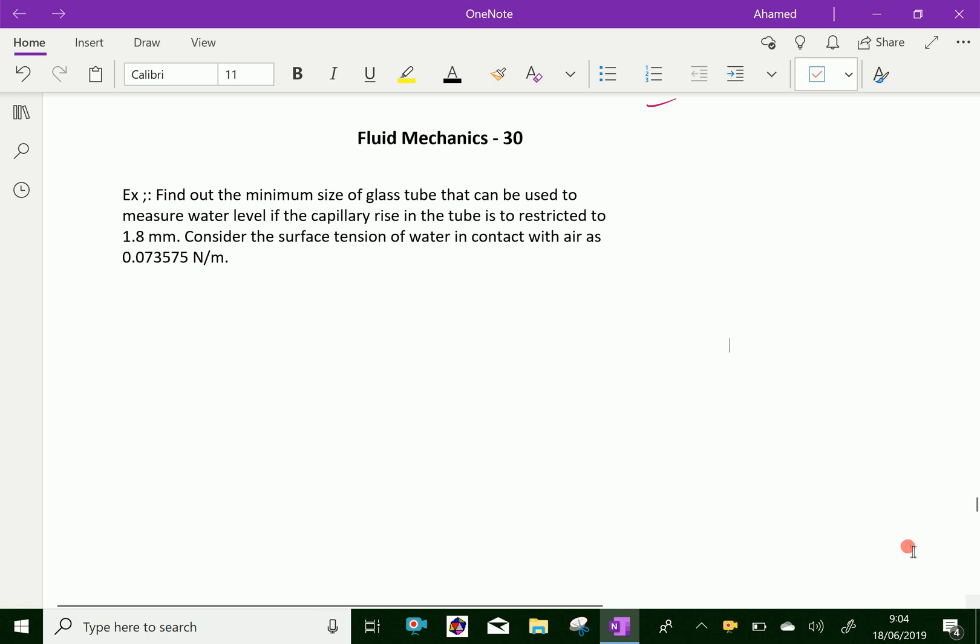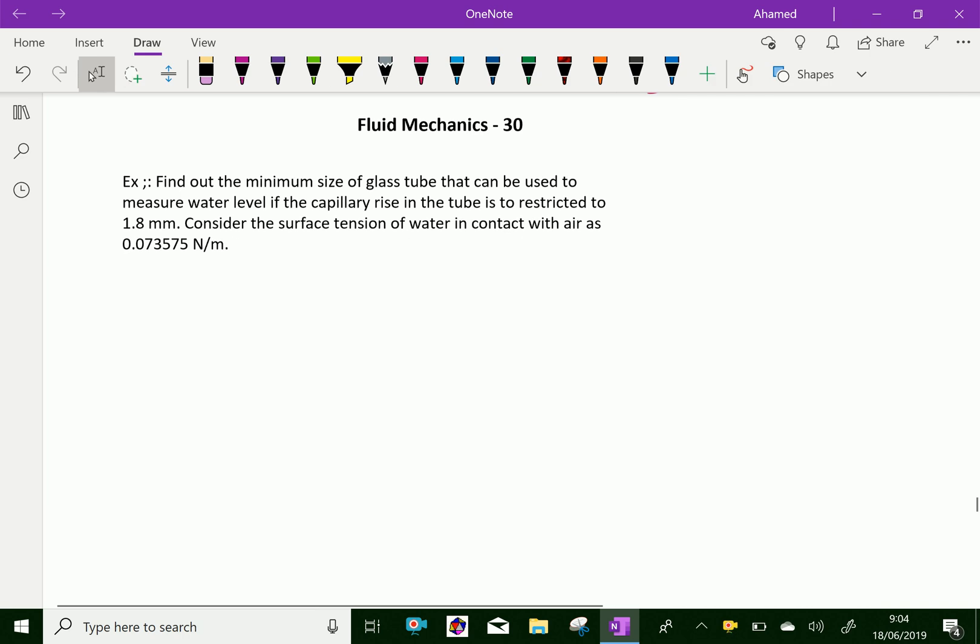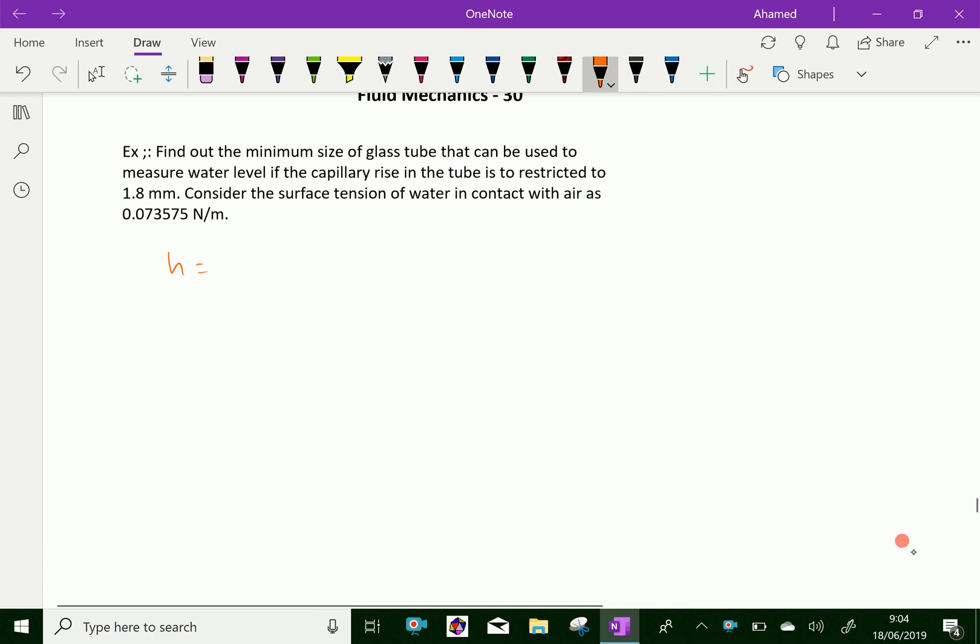Now, here are the given things. H, that is capillary rise, is restricted to 1.8 mm, which equals 1.8 times 10 to the power minus 3 meters.